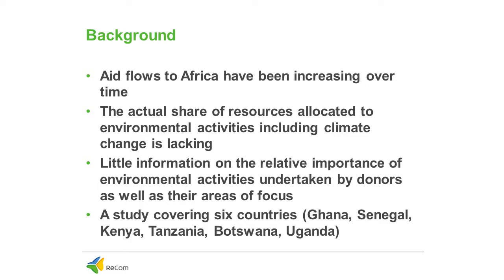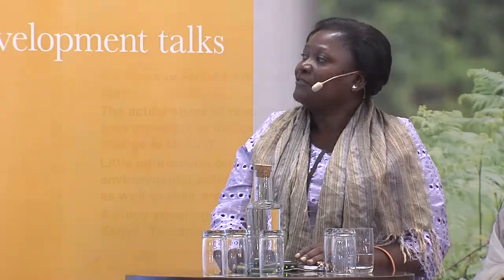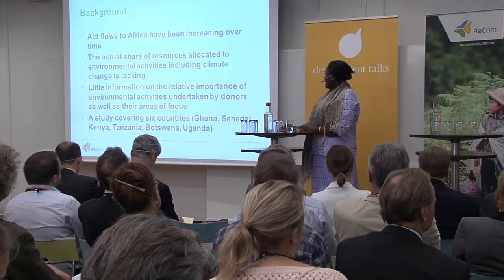Over the past 15 years, aid has been increasing to developing countries, specifically for environmental protection. In the case of Uganda, aid flowing into the country for environmental protection rose from 40 billion Uganda shillings in 2003 to about 80 billion Uganda shillings in 2011. In Ghana, this rose from 85 million dollars in 2001 to 225 million dollars in 2012, indicating significant increases in funding for environmental protection.